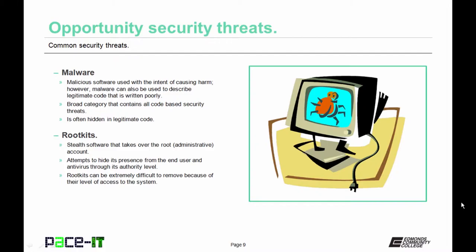The first type of malware we'll mention is rootkits. Rootkits are stealth software that take over the root account — the administrative account. Rootkits attempt to hide their presence from the end user and antivirus software through their authority level. They can be extremely difficult to remove because of their level of access, and may actually overwrite the boot sector so that you need to reformat the whole hard drive.